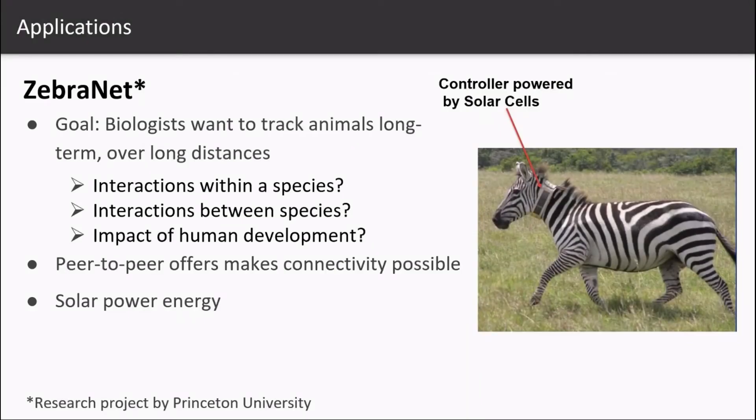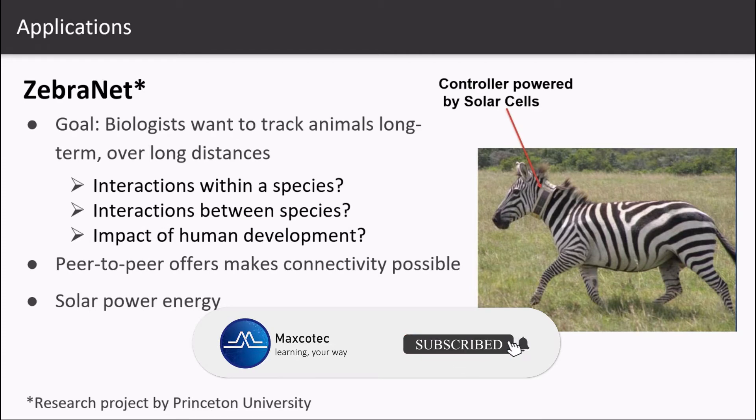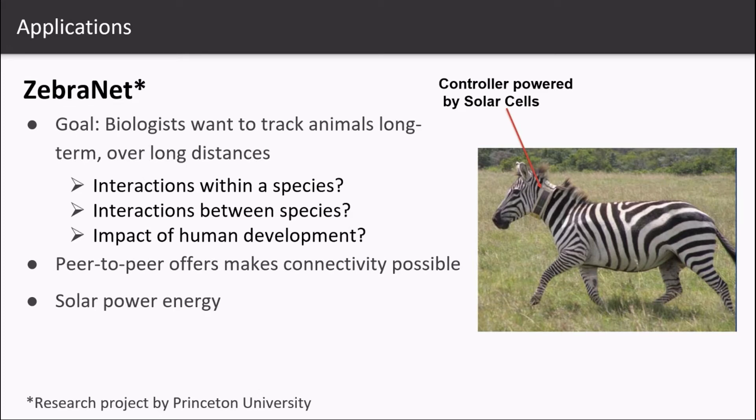The first very interesting one was a research project carried out by students and professors at Princeton University about tracking animal behavior and movements over a long period of time. It was inspired by biologists who wanted to observe the interactions of species within their own kind, interactions between species, and their impact on human development. The species they tracked were zebras, hence the name ZebraNet. The controller was designed to interact with other zebra controllers using GSM technology on a peer-to-peer protocol and was powered by solar energy.